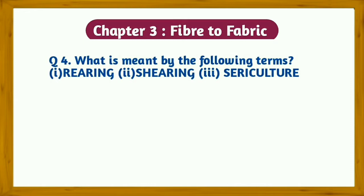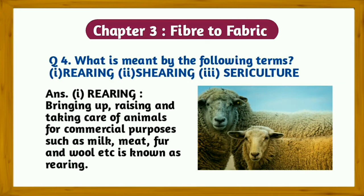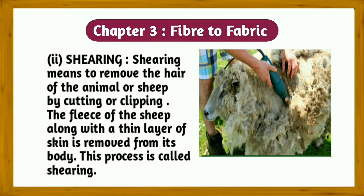Question number four: What is meant by the following terms? (1) Rearing: Bringing up, raising, and taking care of animals for commercial purposes such as milk, meat, fur, and wool is known as rearing. (2) Shearing: Shearing means to remove the hair of the animal or sheep by cutting or clipping. The fleece of the sheep along with a thin layer of skin is removed from its body.